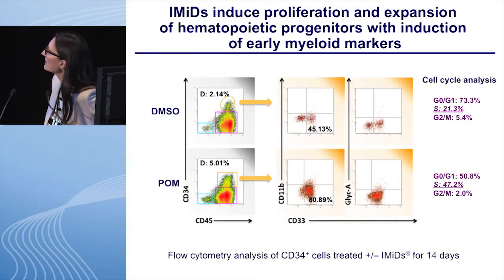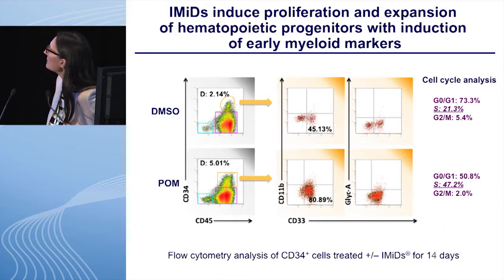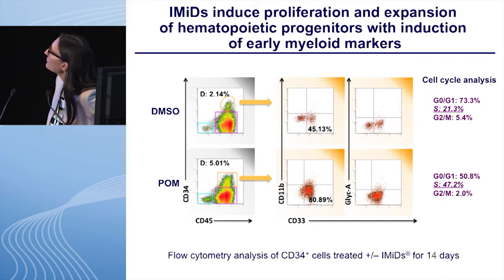To analyze those cells in more detail, we performed flow cytometry analysis of CD34 cells from liquid cultures treated with IMIDs for 14 days. There is a slight increase in CD34 cells treated with pomalidomide, but more strikingly, pomalidomide shows a strong induction of the myeloid markers — the CD33 cells — in comparison to our control group. Cell cycle analysis also showed a strong induction of S phase from 20 to almost 50% of the proliferating cells.